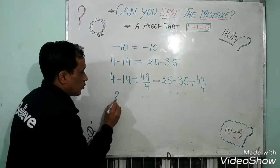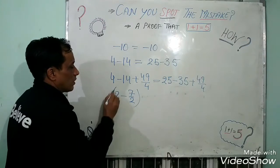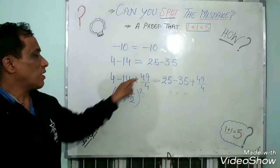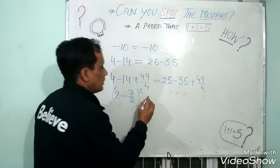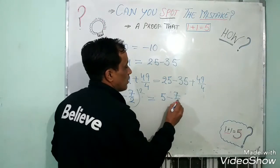I am adding 2 minus 7 by 2 whole square. If we see, completing the square: A square plus B square minus 2AB. In this way, I am adding 5 minus 7 by 2 whole square.